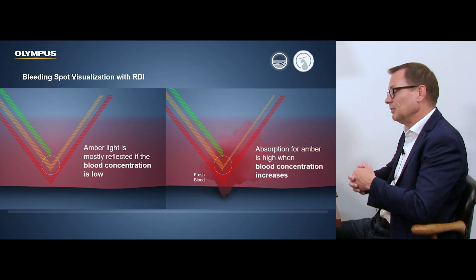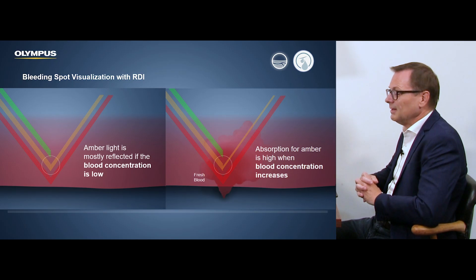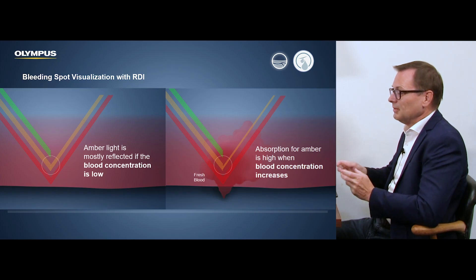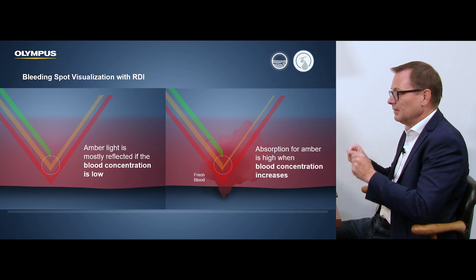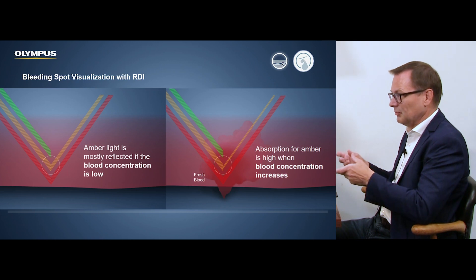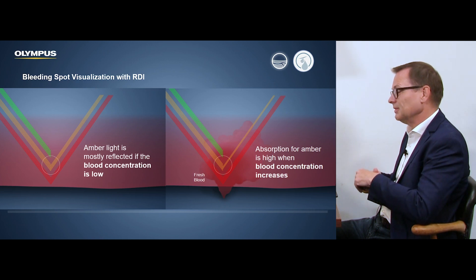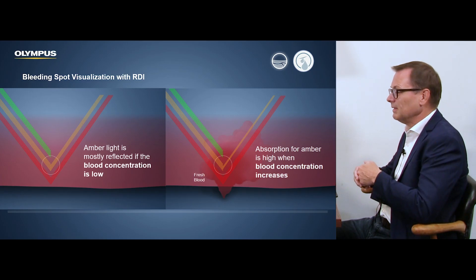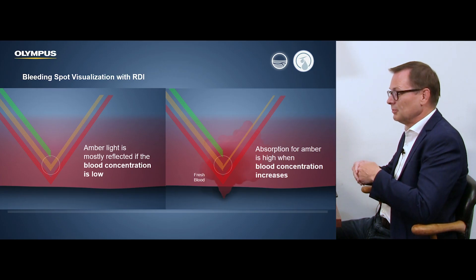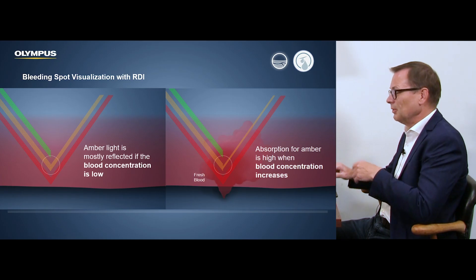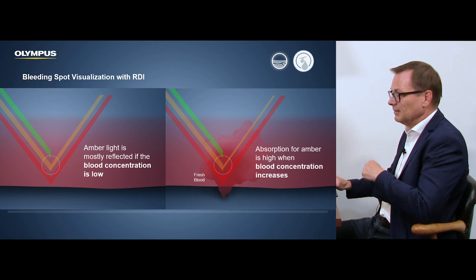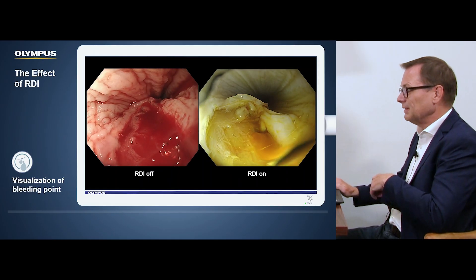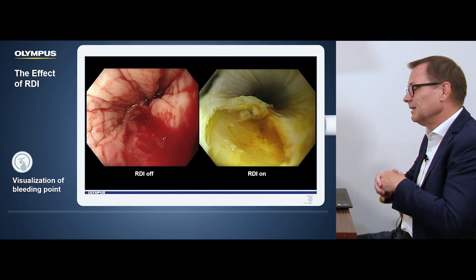You can imagine with exactly the same technology, if you're looking at a bleeding spot — right where the bleeding site is, we have very fresh blood, so the concentration of hemoglobin is very high. The blood which is already surrounded by this has a lower concentration of hemoglobin, and therefore the absorption of the amber is also less than right where the bleeding spot is. We hope that it makes it easier for the endoscopist to find the bleeding spot. Here is a nice example.